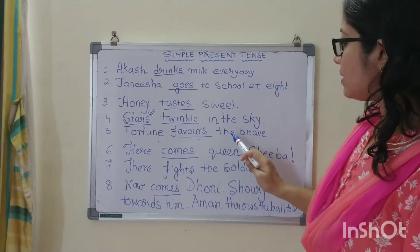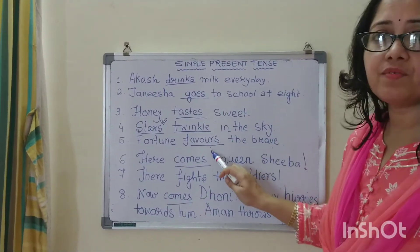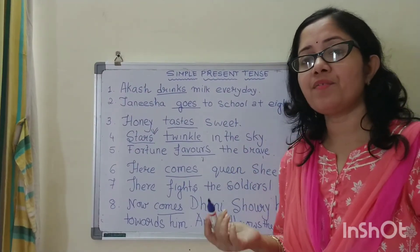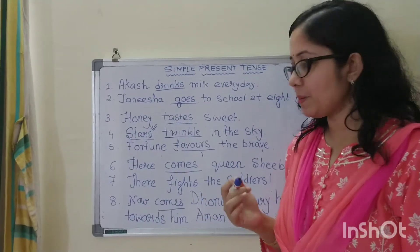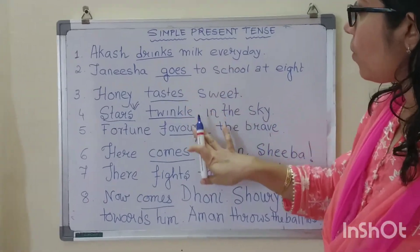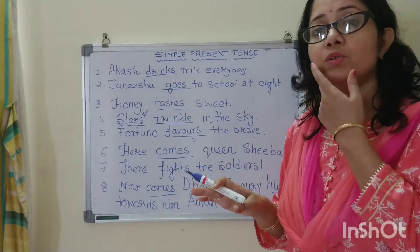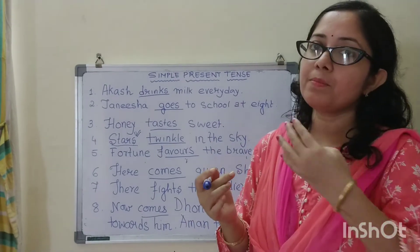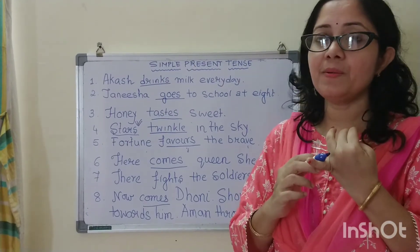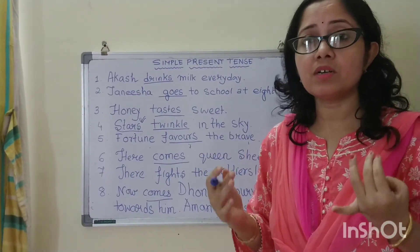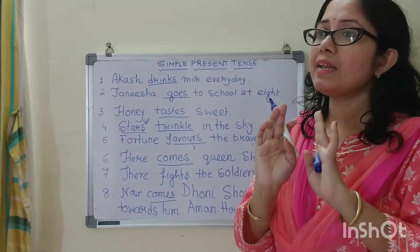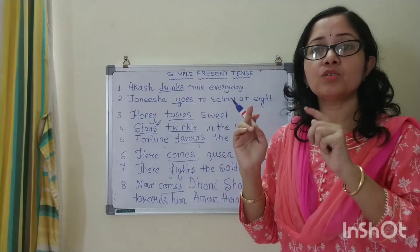Fortune favors the brave — favors. That means those who are very brave, they are always very fortunate, always very lucky. So these are my verbs, and they are all in present tense. When do I use them? Number one: when I am talking about my daily routine, I use simple present tense. Second: when I am talking about certain universal truths which are accepted by all. Like the planets move round the sun — so move.